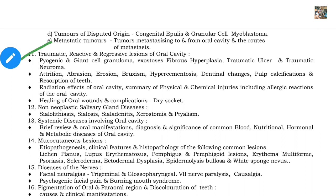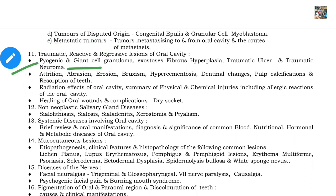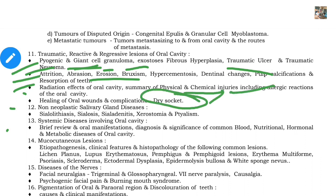Apart from tumors, you need to study traumatic, reactive, and regressive lesions of the oral cavity — including pyogenic granuloma, giant cell granuloma, traumatic ulcer, traumatic neuroma, attrition, abrasion, erosion, and bruxism. All these are important for 5-mark questions. Dry socket also carries a 5-mark question.